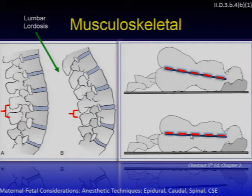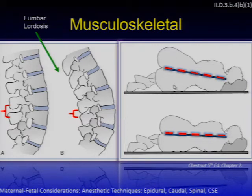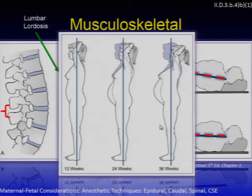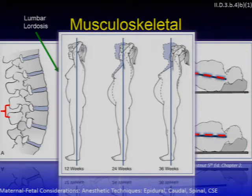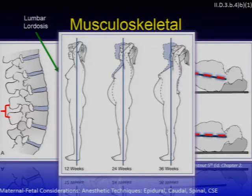The hips widen during pregnancy, so if attempting neuraxial techniques in the lateral position you must account for the increased cephalocaudal angle associated with pelvis and hip widening. By 36 weeks, a woman's height can even be somewhat decreased, kyphosis and lordosis are more pronounced, and your request for the mother to flex her spine may be met with the best effort she can give — but still may not change much of her posture because of the gravid uterus.